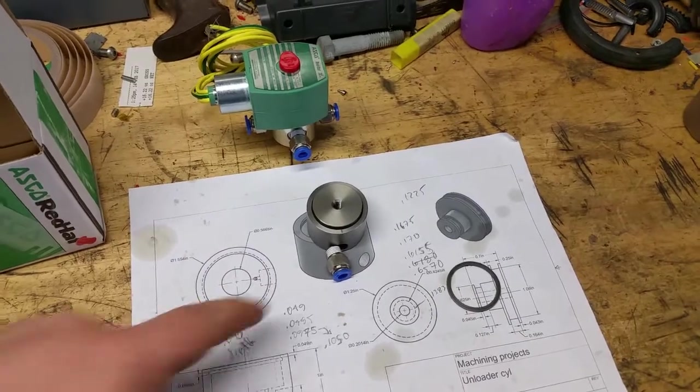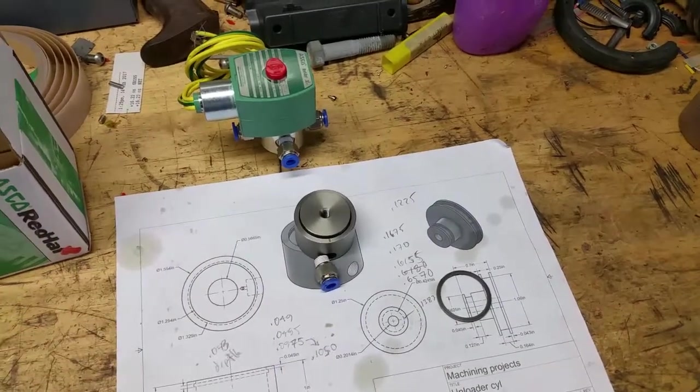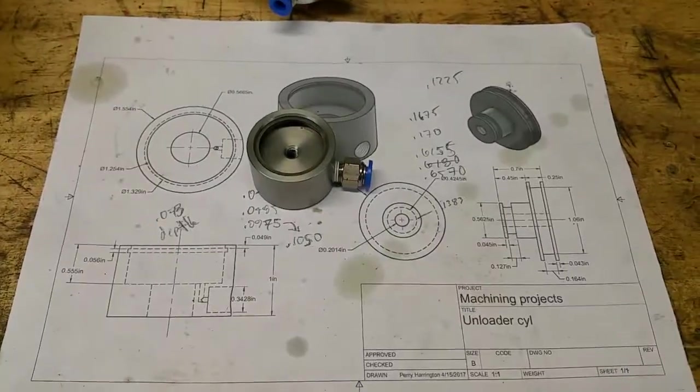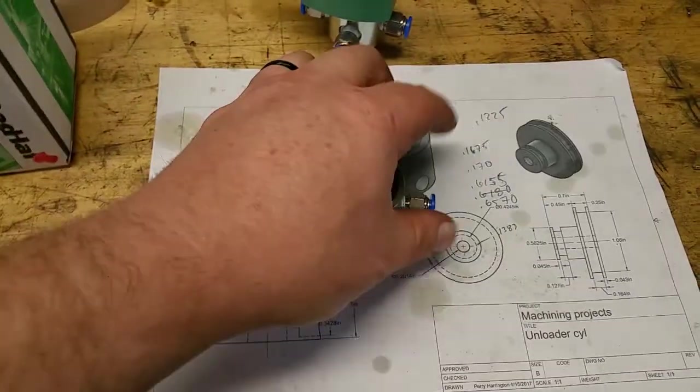So let me assemble this and I'll show you what it looks like when it's all put together. Well, here's what the little pancake cylinder looks like fully assembled.